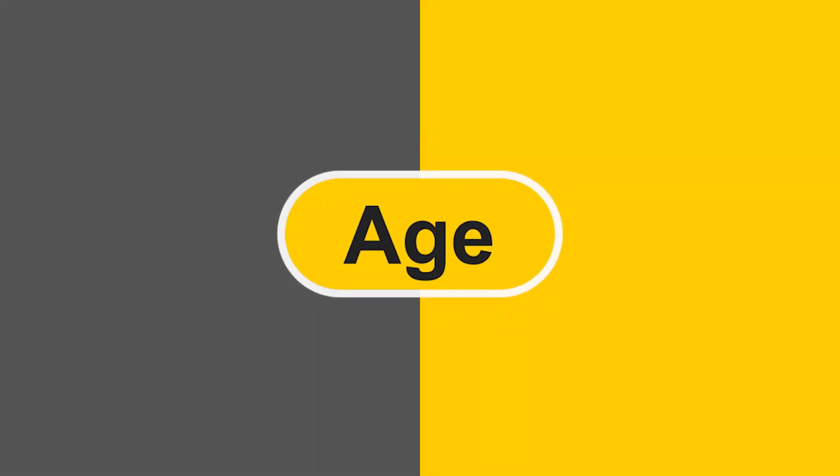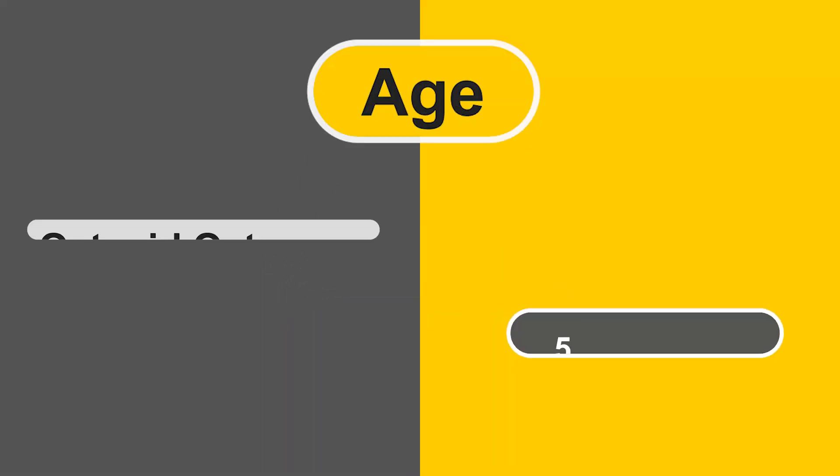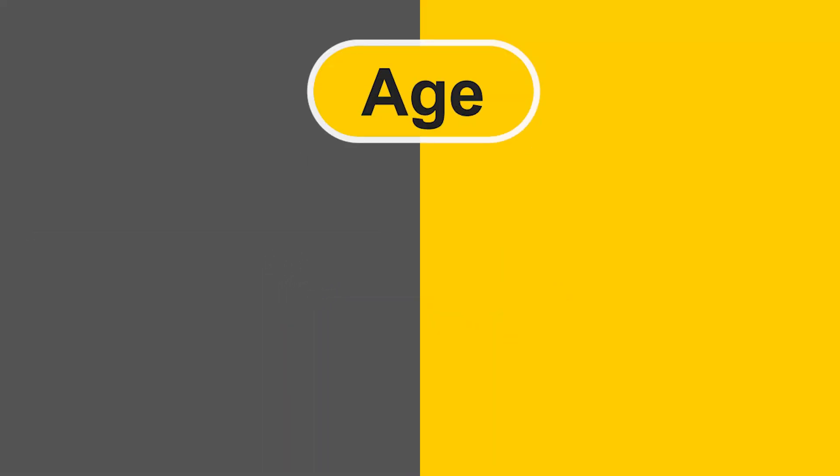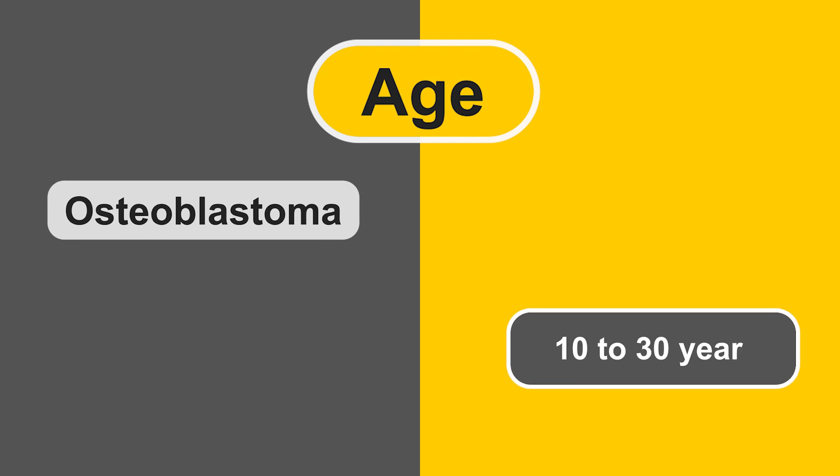First feature: age. Osteoid osteoma occurs in ages 5 to 20 years, while osteoblastoma occurs in ages 10 to 30 years.